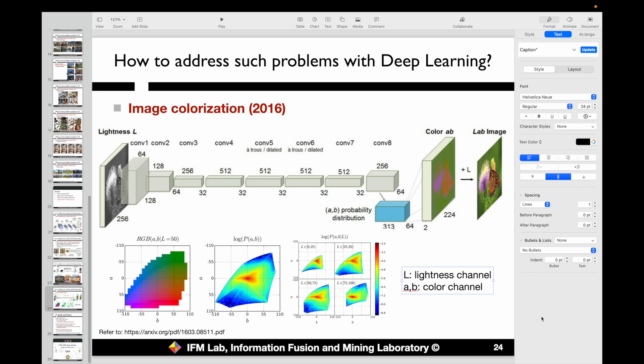Okay, so besides the problem we mentioned before, another very interesting problem is called image colorization. In other words, we'll try to convert a grayscale image into a color image.